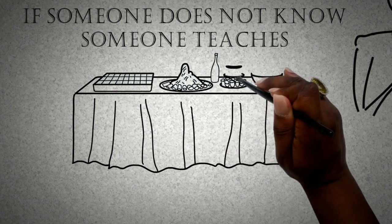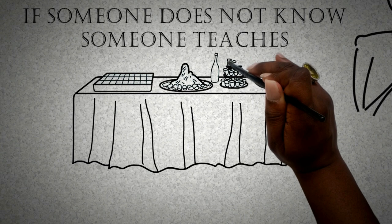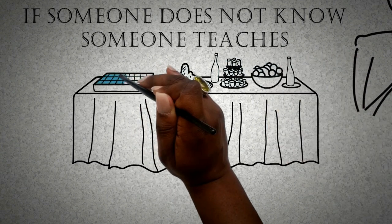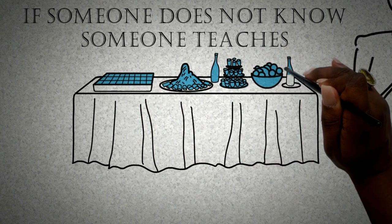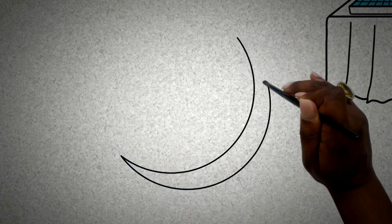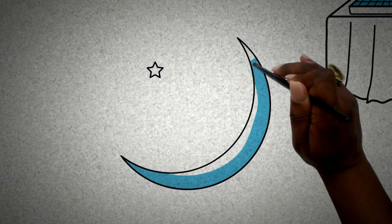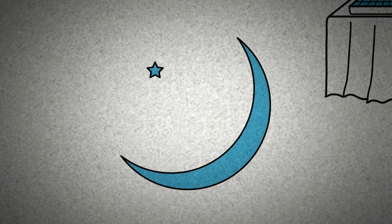Anansi woke up at midnight to continue what he had been doing for the past few weeks, which was stealing as much food as he could possibly eat. He would make fire, cook, and eat it before morning. He always ate to his satisfaction before smoking his pipe under the moonlight. However, that night, as soon as Anansi woke up, he saw someone standing at a distance.